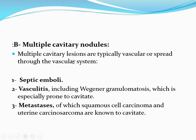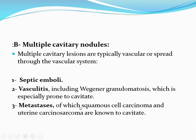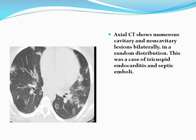Multiple cavitary nodule lesions are typically vascular or spread through the vascular system. Septic emboli and vasculitides, including Wegener's granulomatosis, are especially prone to cavitate. Metastases from squamous cell carcinoma and uterine carcinoma are known to cavitate. Axial CT shows numerous cavitary and non-cavitary lesions bilaterally in a random distribution. This was a case of tricuspid endocarditis and septic emboli.